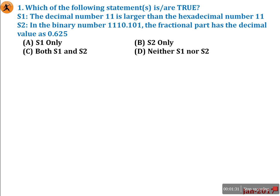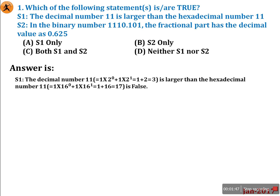Before solving, find the decimal value of binary 11 and the decimal value of hexadecimal 11. For traditional method: binary 11 = 1 × 2^0 + 1 × 2^1. 2^0 is 1, so 1×1 = 1. 2^1 is 2, so 1×2 = 2. Therefore 1 + 2 = 3. So binary 11 has decimal value 3.